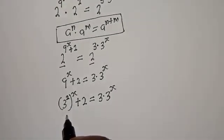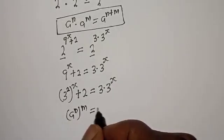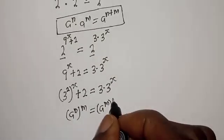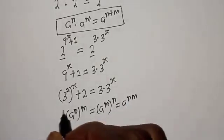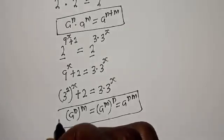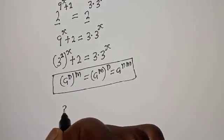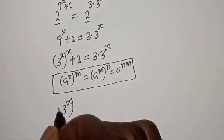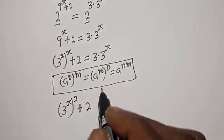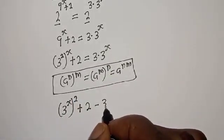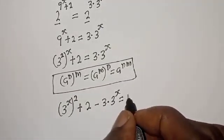Take note that if you have a raised to power n, to the power of m, this equals a raised to power n times m. So 3 raised to power 2 raised to power s can be written as 3 raised to power 2s. Bringing everything to one side, we get 3 raised to power 2s plus 2 minus 3 multiplied by 3 raised to power s is equal to 0.